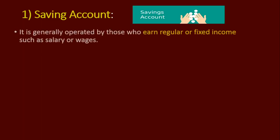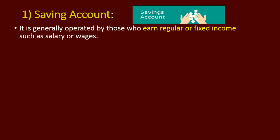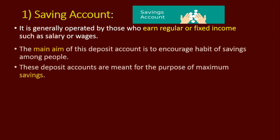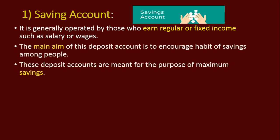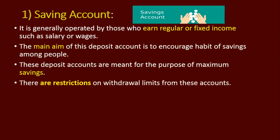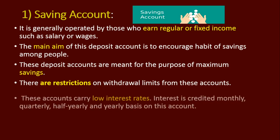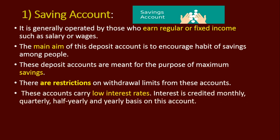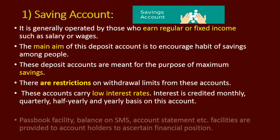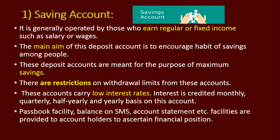The first demand deposit is savings account. It is operated by regular earners or those with fixed income such as salaries or wages. The main aim of the savings account is to encourage the habit of savings. There are restrictions on withdrawal limits — you cannot withdraw every day. A lower rate of interest is applied and the interest is credited monthly, quarterly, half yearly, or yearly based on the account. You get a passbook, SMS balance alerts, and account statement facilities.